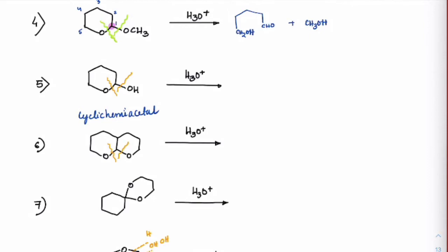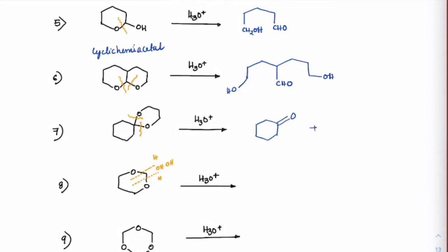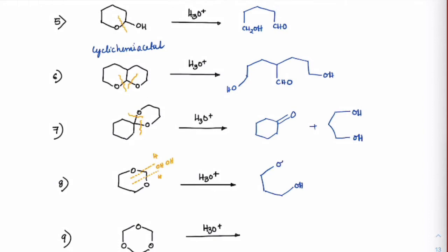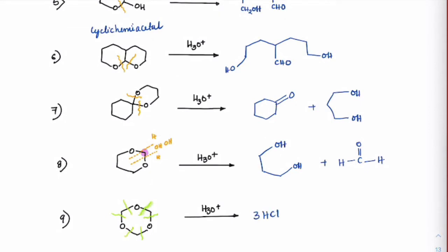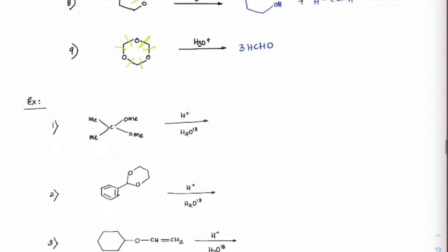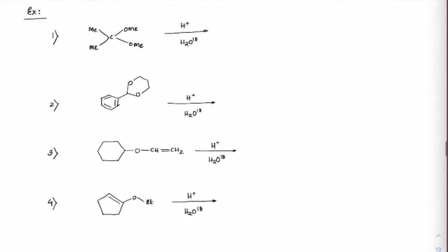Wherever there is an acetal, ketal, or cyclic ketal, just break both the carbon–oxygen bonds during hydrolysis and substitute with an aldehyde or keto form. Breaking here and here gives CHO and CH₂OH. In another case, breaking on both OH sides with CHO in the middle gives a keto group and alcohol. For a case with three such groups, you get three moles of CHO with no alcohol form present.